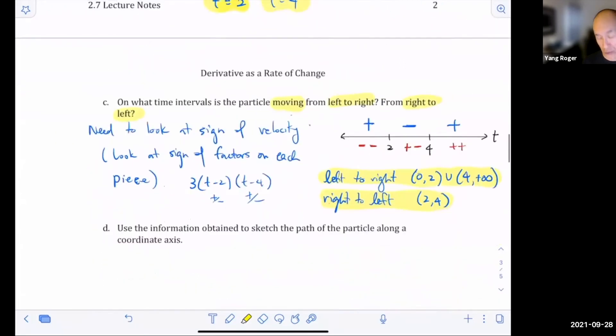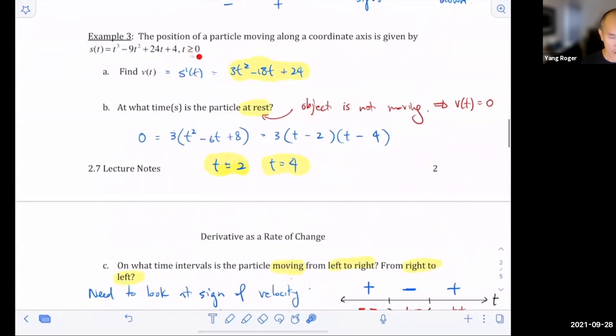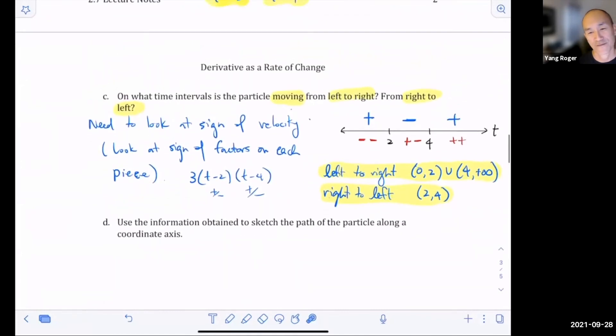I have a question for you. Why did I start at zero? How come I don't have negative numbers? Is it because they said time is greater or equal to zero? Oh, Sharon, you're right. I was waiting for someone to ask me so I could explain.